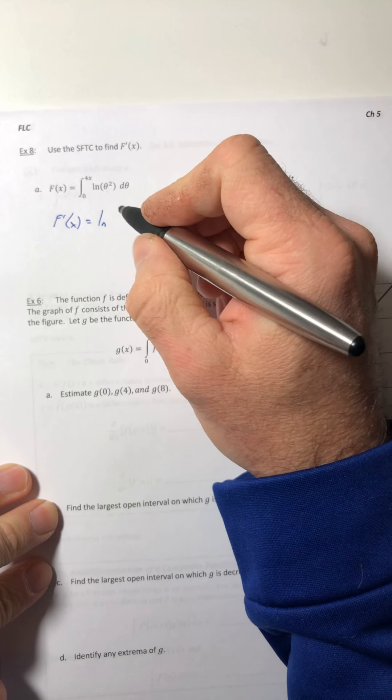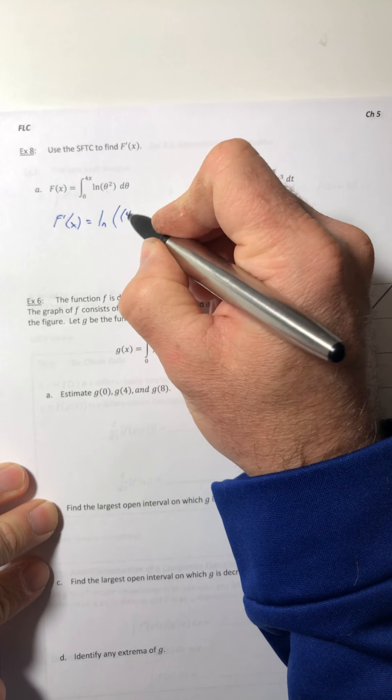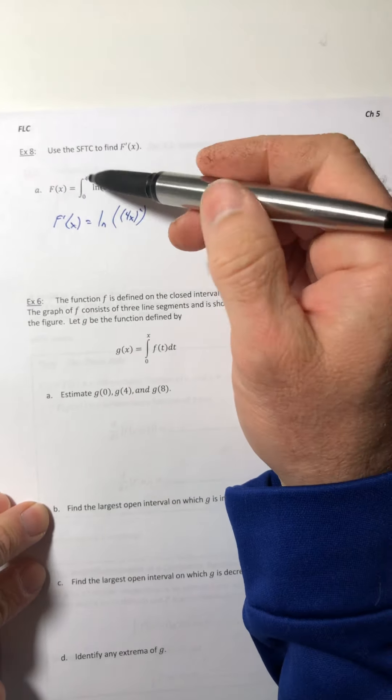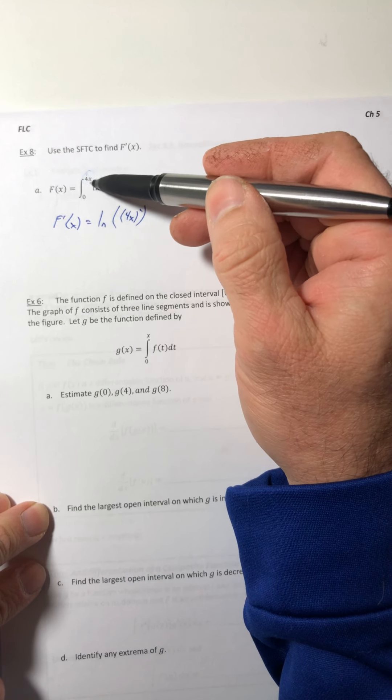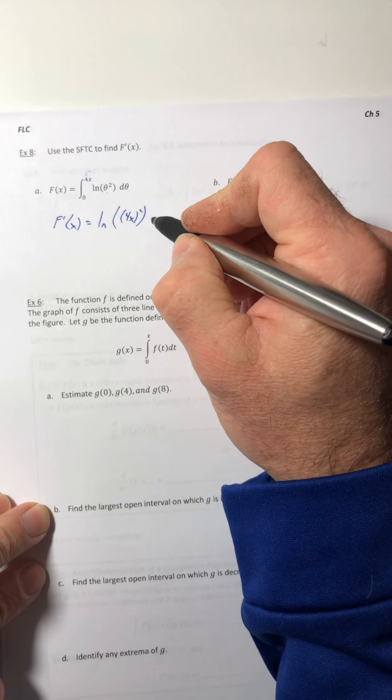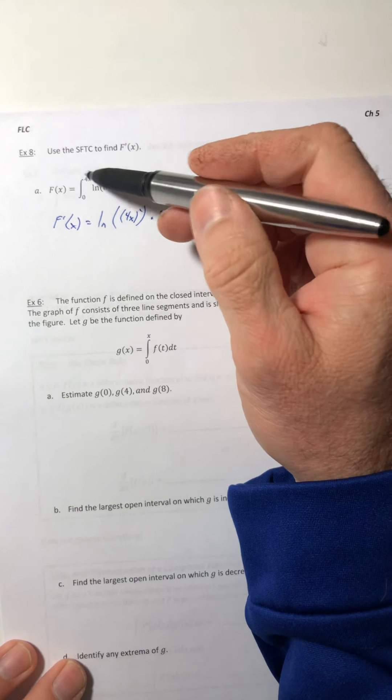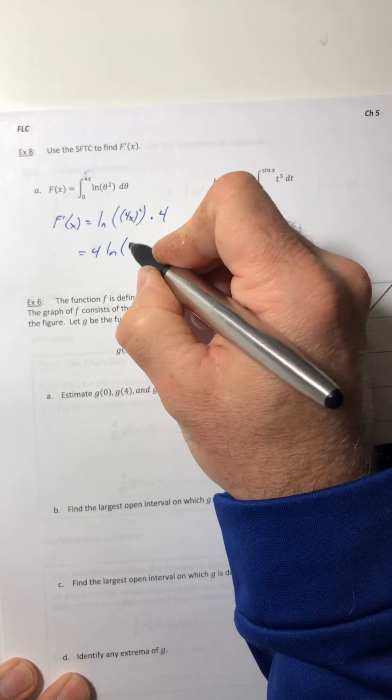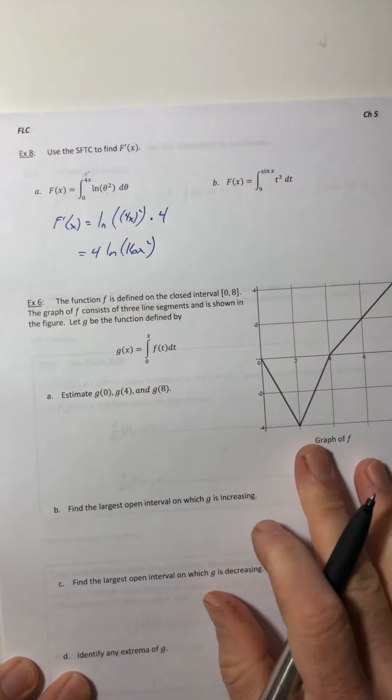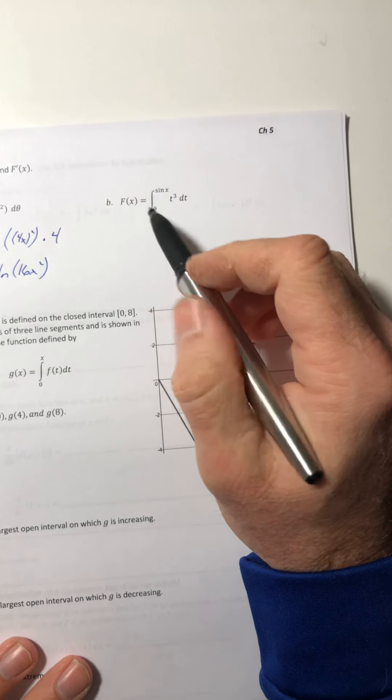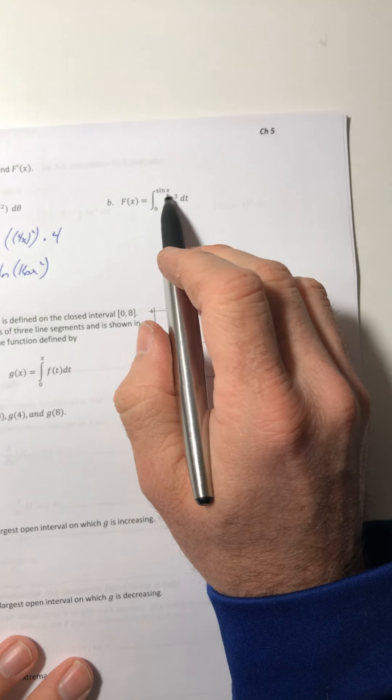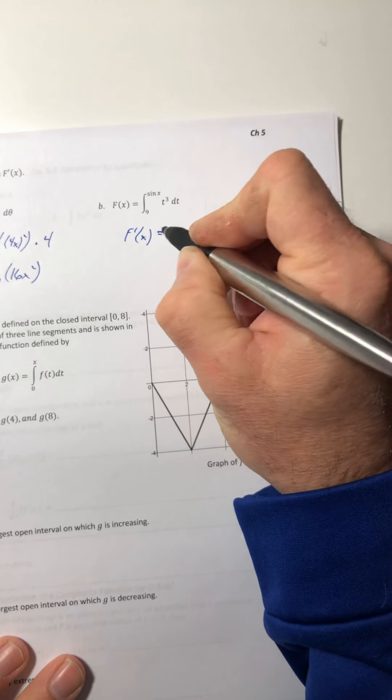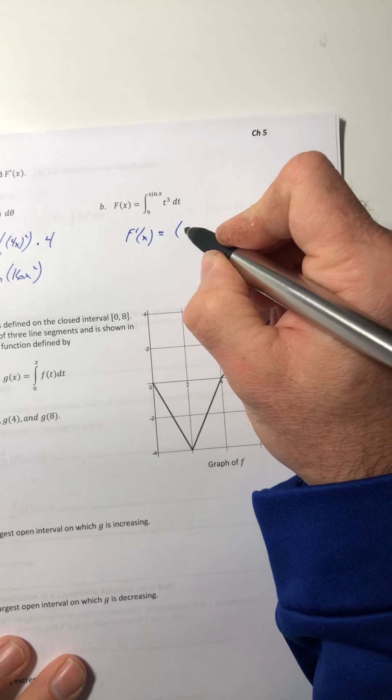So you're still going to take that upper bound and plug it in for your variable. So in this case, we'll get ln of 4x squared. But you have to take the derivative of your bound because it's no longer just an x, now it's a 4x. So now you've got to multiply by the derivative of that bound. And we end up with 4 ln of 16x squared. And same thing over here. Anytime that bound is not just x, you've got to multiply by its derivative.